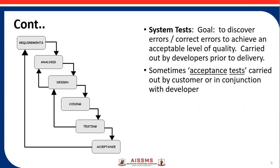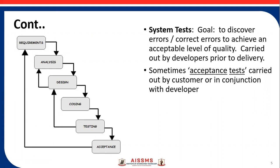The next phase is testing. In the testing phase, we perform different types of testing. Testing is carried out to discover errors and to identify the quality level of the software. It is important to test at different stages using different testing methods. Sometimes an acceptance phase involves both the customer and the developer.